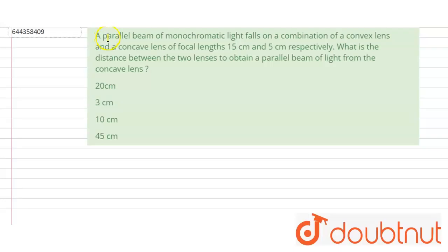Hello everyone, let's start the question. The question is: a parallel beam of monochromatic light falls on a combination of a convex lens and a concave lens of focal length 15 cm and 5 cm respectively. What is the distance between the two lenses to obtain a parallel beam of light from the concave lens?